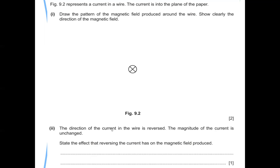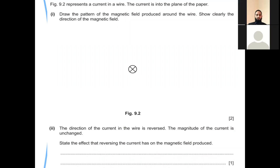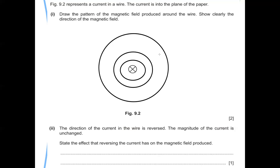When drawing the magnetic field pattern, always show the direction clearly. Using the right hand rule: a cross means the current is going into the page, so the thumb points in, and fingers wrap around giving the direction of rotation. The first two field lines should be closer together, while the second and third have greater spacing, showing that field strength is decreasing.